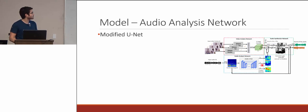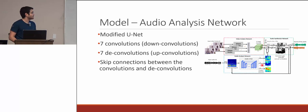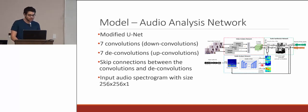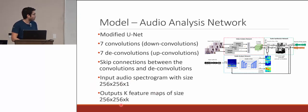The audio analysis network modified U-Net with seven convolutions and seven deconvolutions, adding skip connections between them. The input was an audio spectrogram of size 256 by 256 by 1, and it outputs K feature maps of size 256 by 256 by K. Notably, the input and output have the same spatial dimensions — this is a key feature of U-Net.